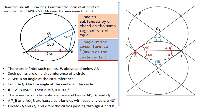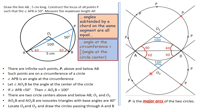The locus of P includes all points on the major arcs of both circles. P is not anywhere on the minor arc, because placing P there would not give an angle of 50°. Any point on the major arc circumference, when connected to A and B, gives angle APB equal to 50°.